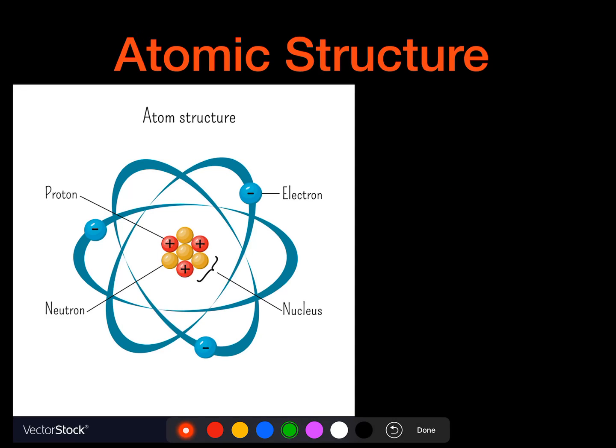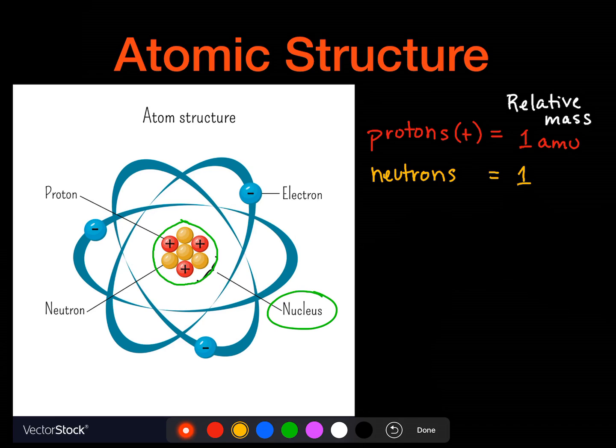We're going to take a look at this diagram here. We have the very center, we have our nucleus. And inside the nucleus, we have protons. So our protons are positively charged. And we have these, what we would call a relative mass. And for protons, they have 1 AMU. We also have in the nucleus some neutrons. And they don't have any charge, so they are just some mass here, so 1 AMU.